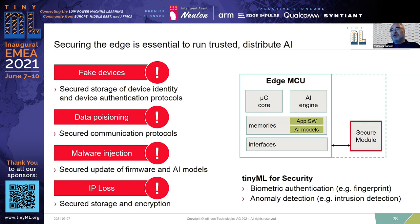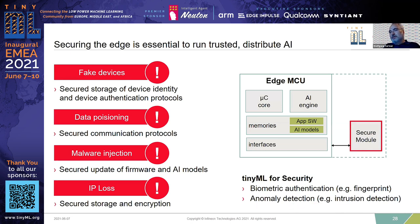Embedded machine learning itself can also be used to enhance security. There is sometimes the possibility of user authentication, like fingerprint sensing embedded in chip cards these days. You can also use a secure process in the background monitoring what's going on in your MCU and doing anomaly detection to detect intrusions into your system.